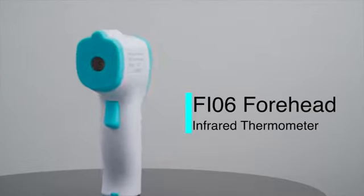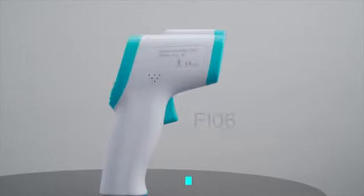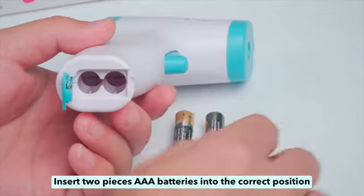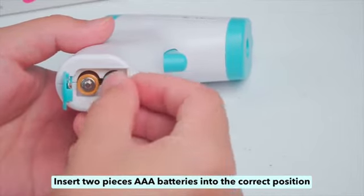FI-06 Forehead Infrared Thermometer. Insert two AAA batteries into the correct position.